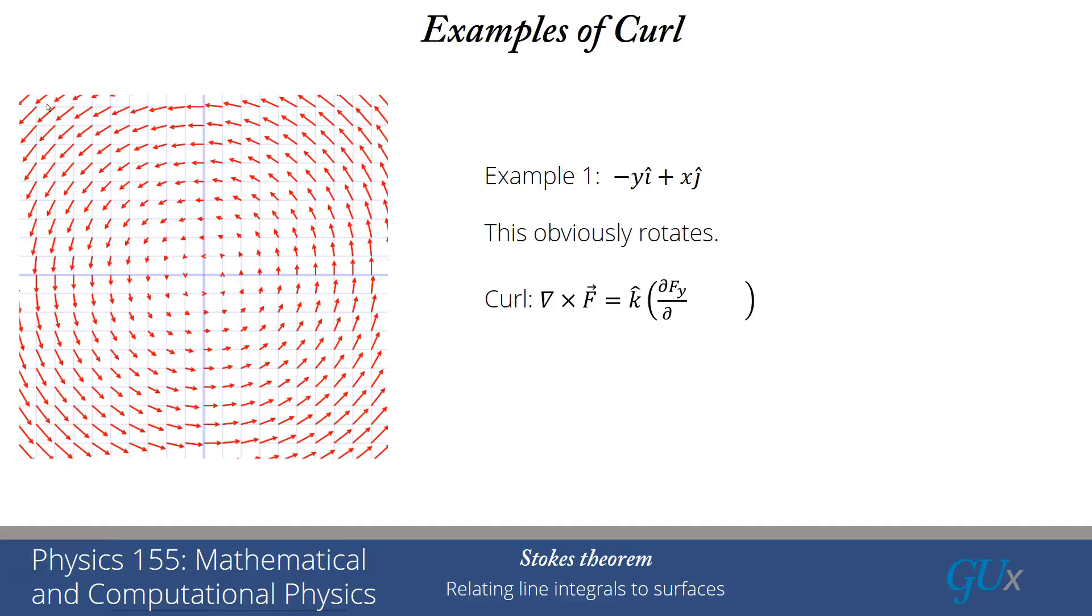What is the curl? It's del cross f, which in this case, because I only have an i hat and a j hat, will only have a component in the k hat direction. It's going to be the derivative of fy with respect to x, minus the derivative of fx with respect to y.